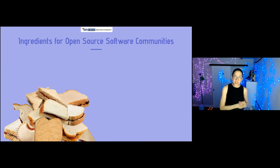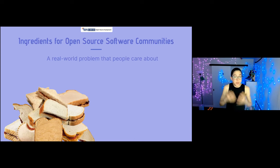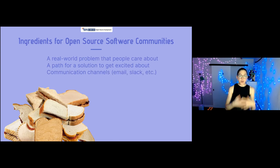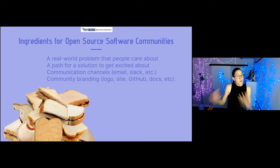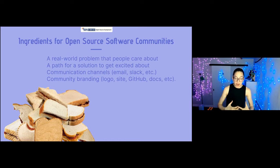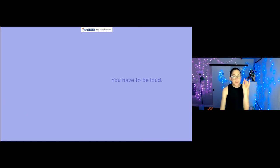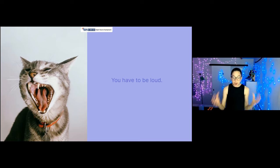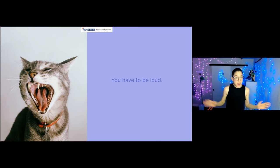Ingredients for open source software communities: the first is that real-world problem. You can have the greatest software in the world, but if you don't have people with an actual problem that need it, you don't have much. You need a path, a direction, a hope that others can look at and say yes, I'm excited about that too. You need communication channels. It's good to have branding and symbols that help unify the community. And there's one more thing — this might be the hardest: you have to be loud. For the introverts in the audience, I get it. Putting yourself at the table, posting on social media when you'd rather be quiet is an incredibly hard mental barrier. But if you don't do that, you can do the greatest work in the world, and if you don't tell anyone, no one's going to know about it.